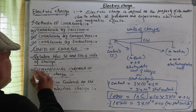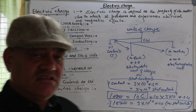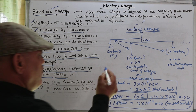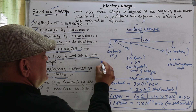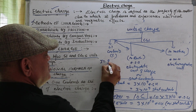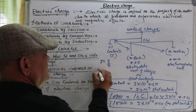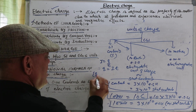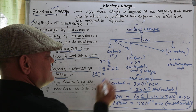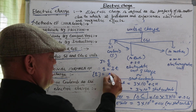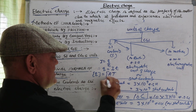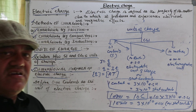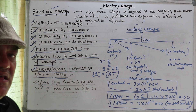What is the dimensional formula of electric charge? We know that current I = Q/T, therefore Q = I × T. So the dimensional formula of electric charge is [AT], where A is ampere (current) and T is time.